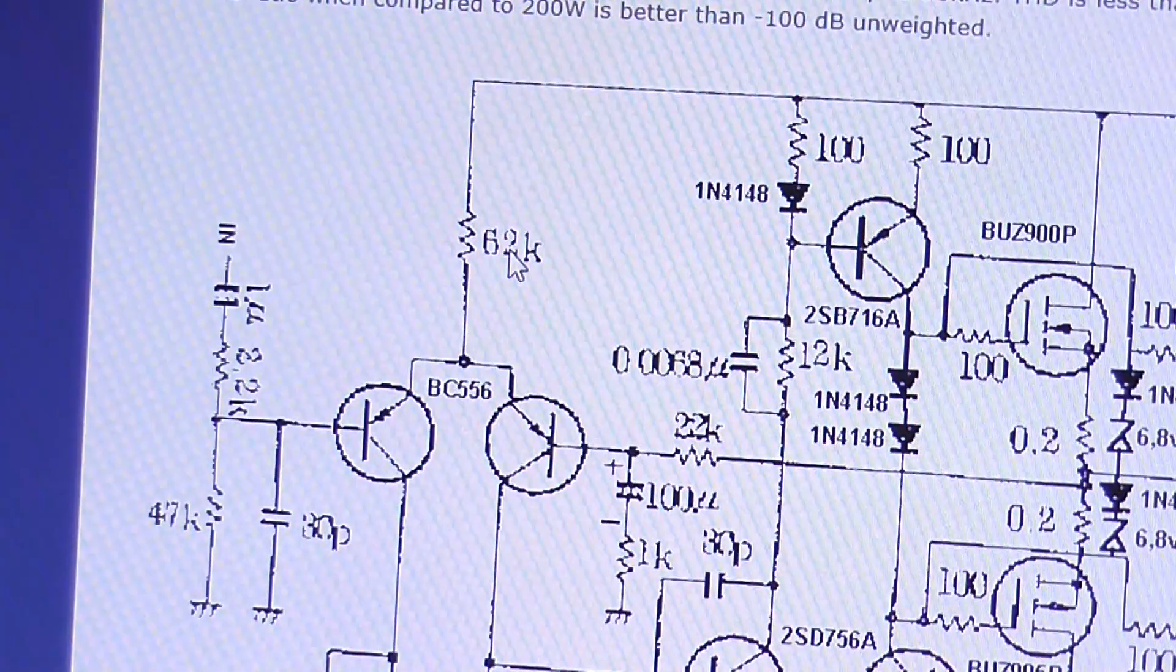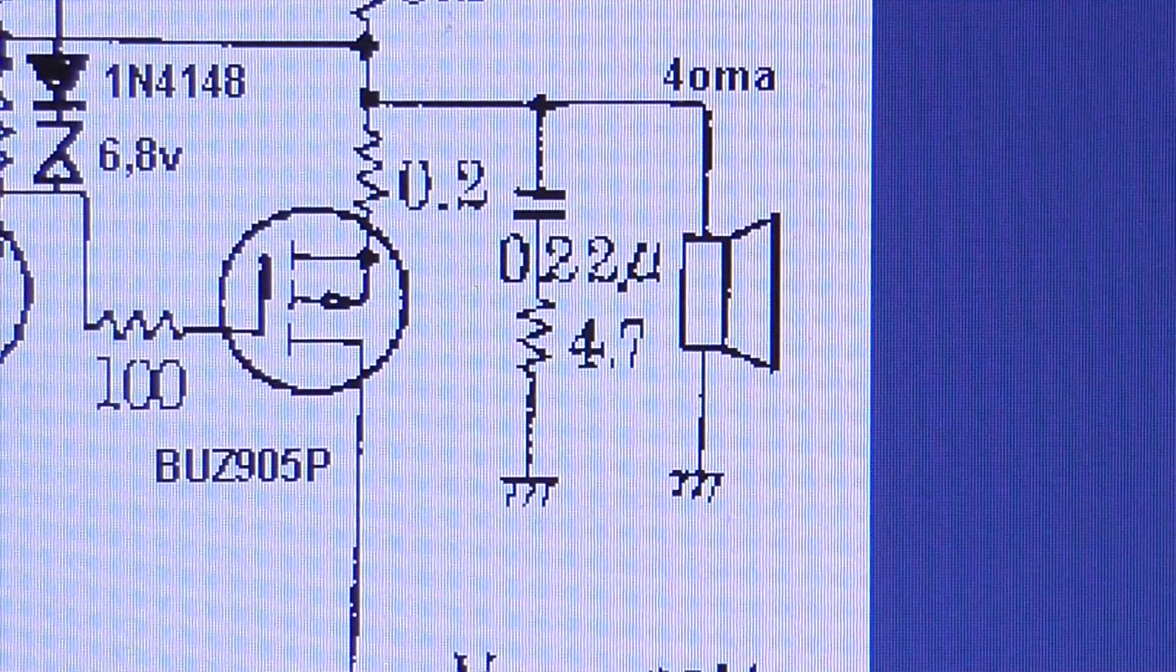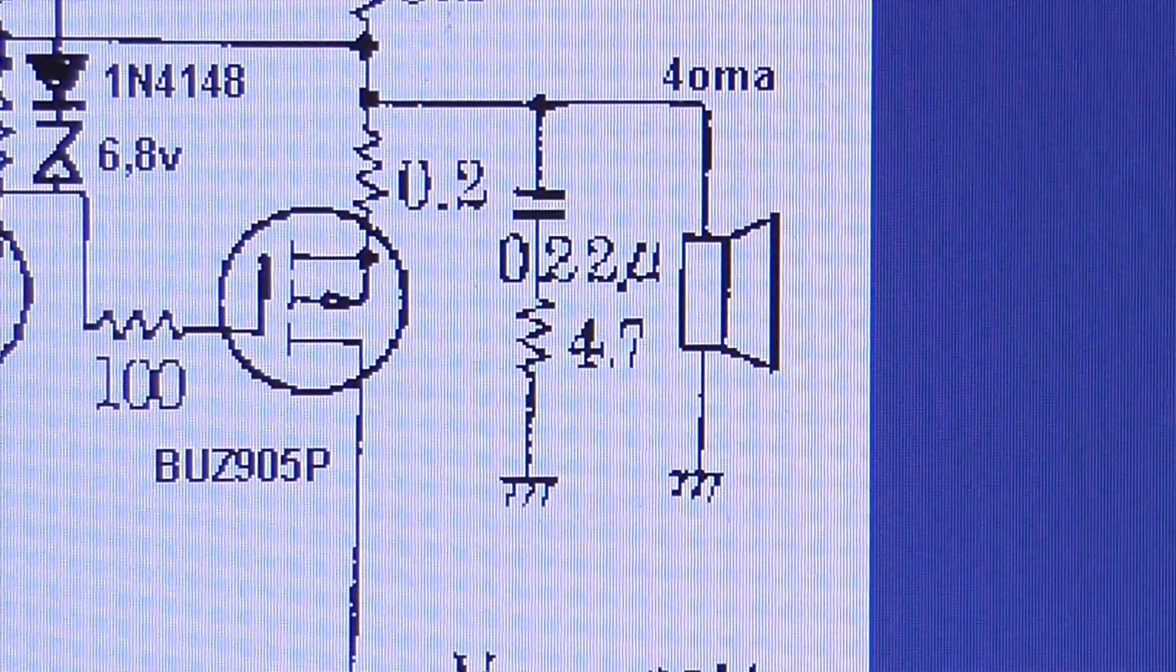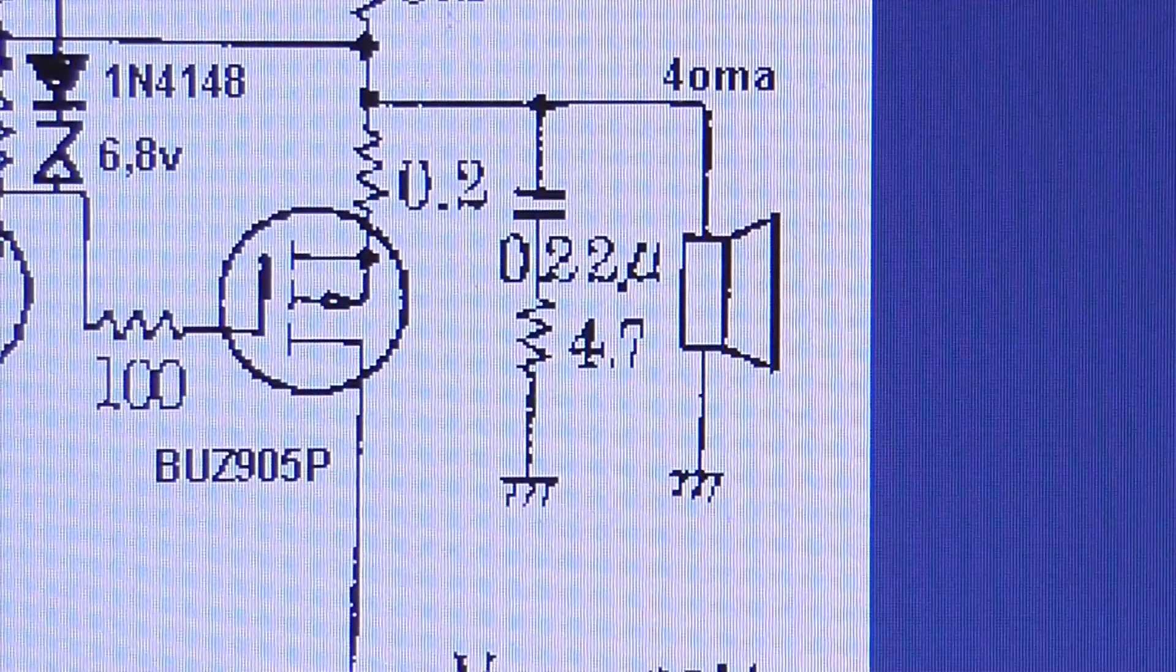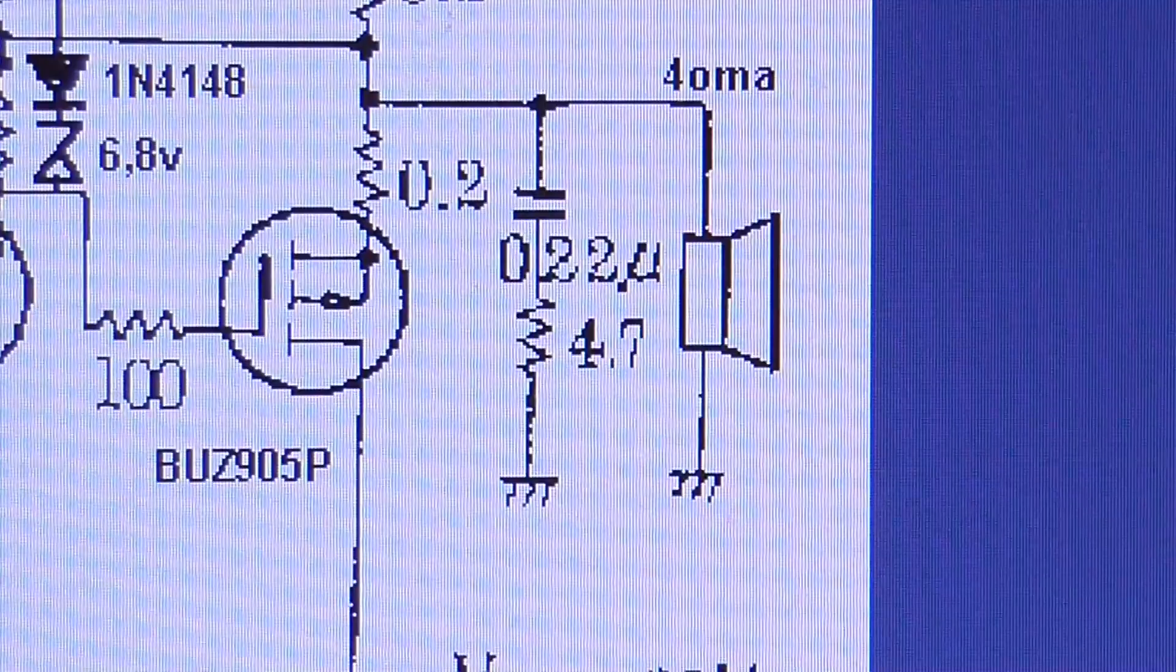And another point over at the Zobel network there it's a 0.22 microfarad capacitor with a 4.7 ohm resistor in series with it to ground. Not 4k7 as on the other schematic. So that's another error.